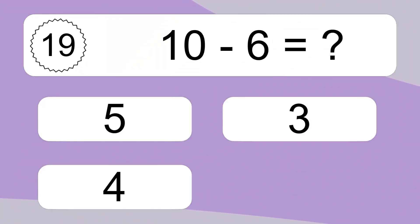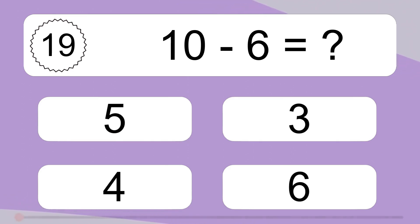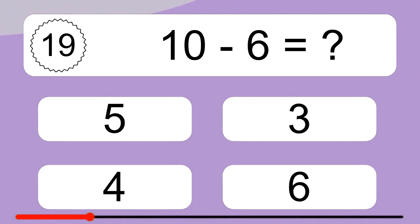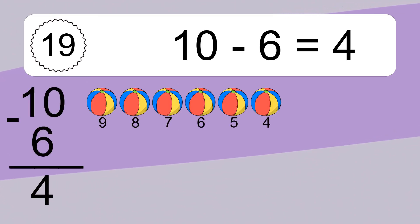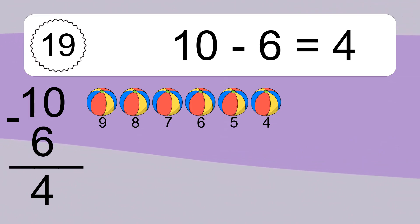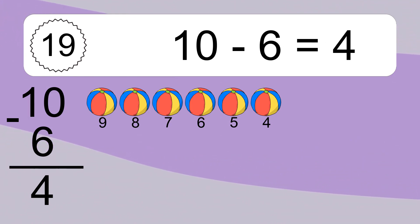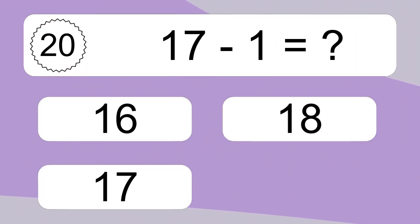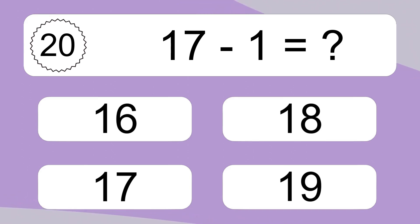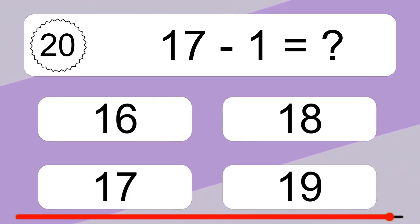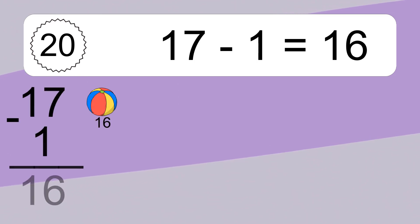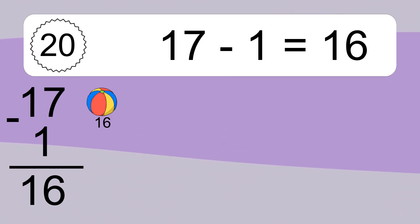10 minus 6 equals what? 10 minus 6 equals 4. Let's count it: 9, 8, 7, 6, 5, 4. 17 minus 1 equals what? 17 minus 1 equals 16. Let's count it: 16.